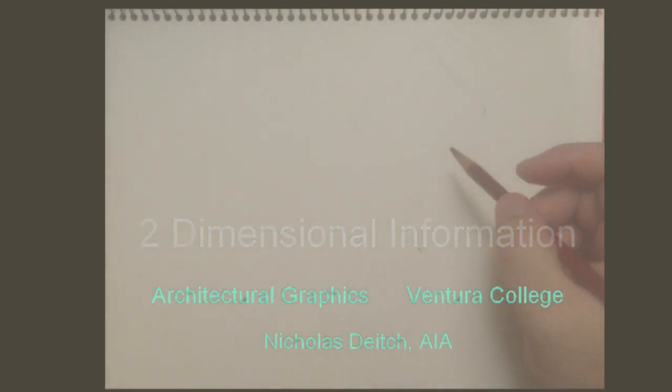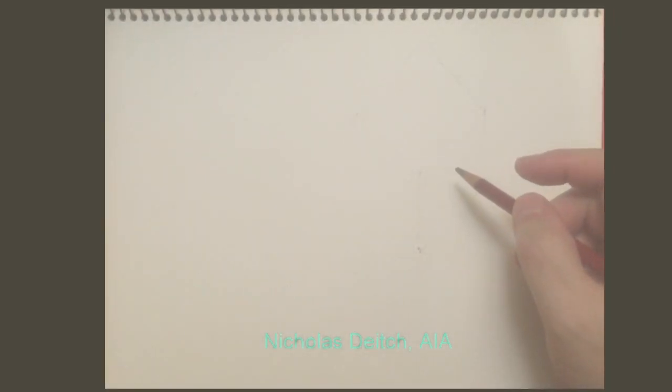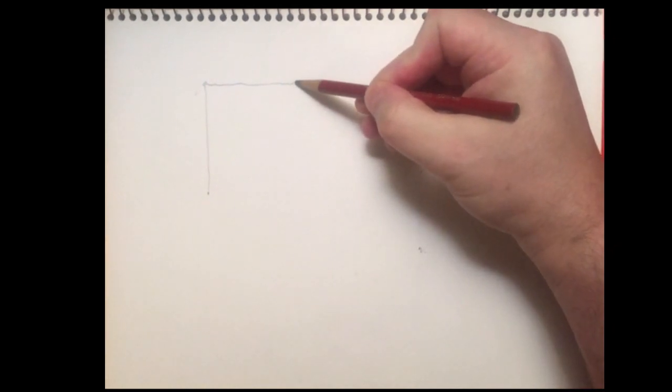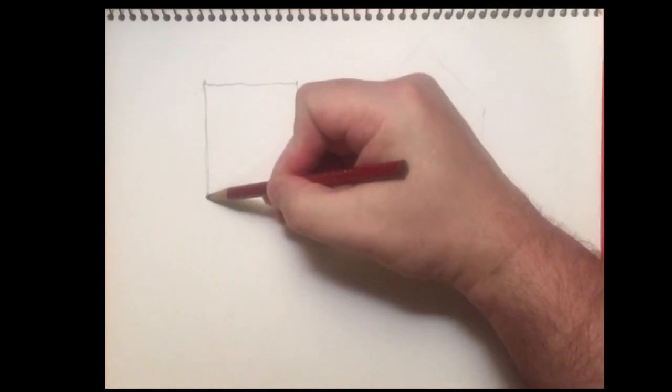I'm going to share with you a quick demonstration drawing a three-dimensional object with two-dimensional information. I'm going to start with a top view of the object, drawing a simple square in this case.